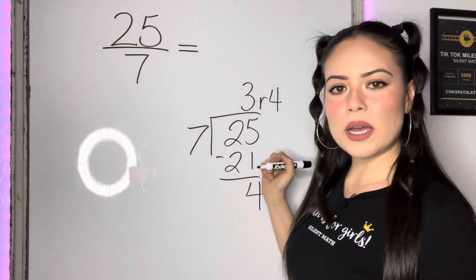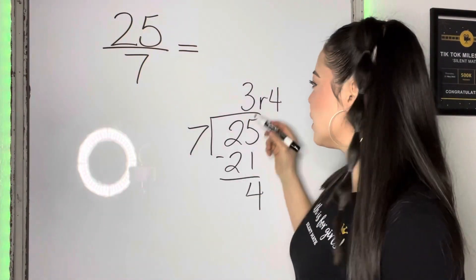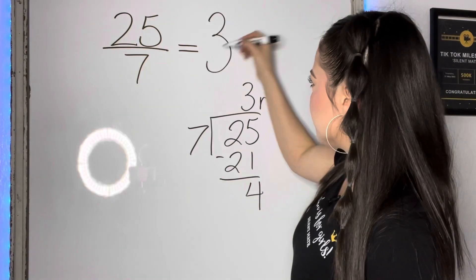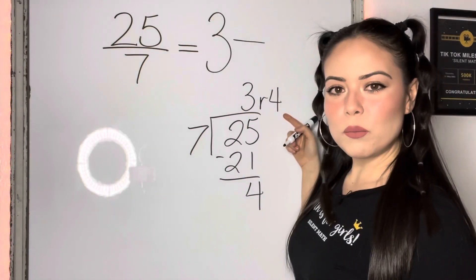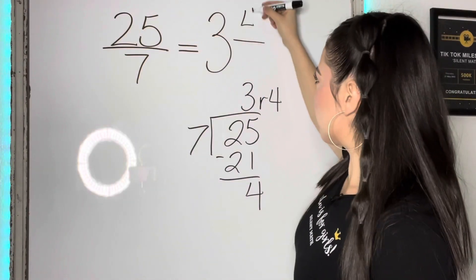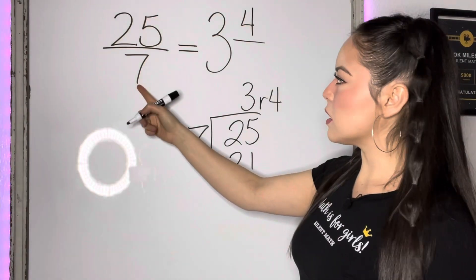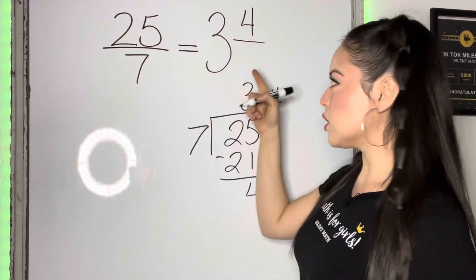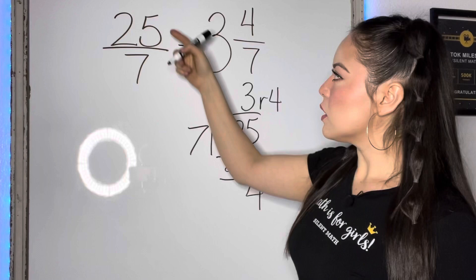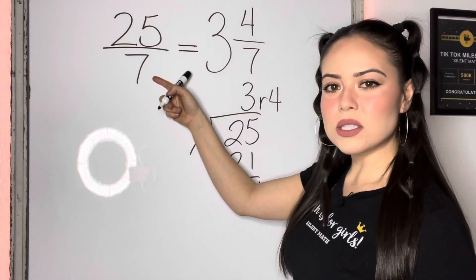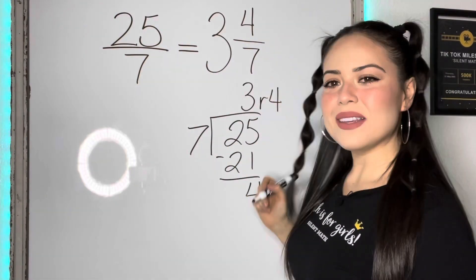So now let's use this to turn that into a mixed number. So the three will be the whole number. Your remainder four will be the numerator of your mixed number. And we're gonna bring over that denominator from this improper fraction onto here. So 25 sevenths is equivalent to three and four sevenths.